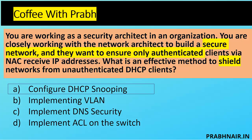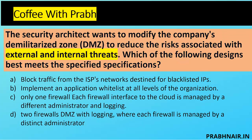Let's move to the next coffee shot. A security architect wants to modify the company DMZ to reduce risk associated with both external and internal threats — controlling traffic coming from outside as well as traffic happening internally. Which of the following designs best meets the specification? Option A: block traffic from the ISP network destined for blacklisted IPs — that only blocks external attacks, so A is not the answer.